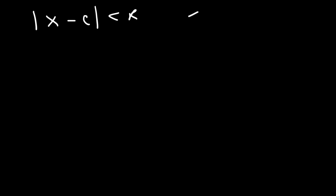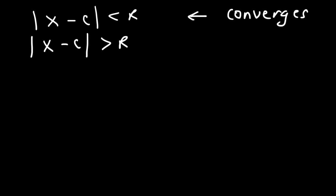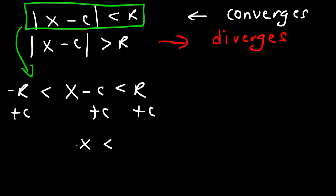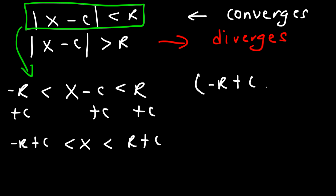This is where the series converges. Whenever |x − c| > r, the series diverges. To remove the absolute value, say that x − c is less than r but greater than negative r. If you add c to both sides, you get that x is between c − r and c + r. So the interval of convergence is (c − r, c + r).